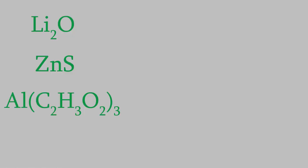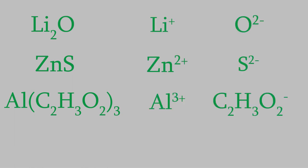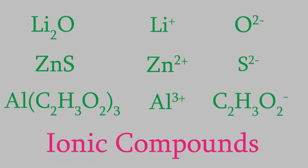In these compounds, the metals usually had a positive charge and the nonmetals had a negative charge. For this reason, they're called ionic compounds.